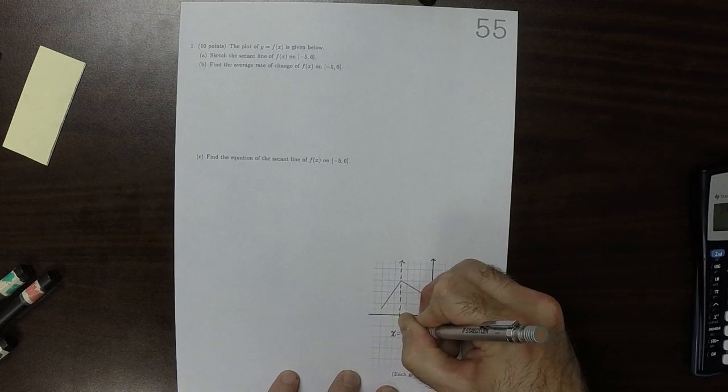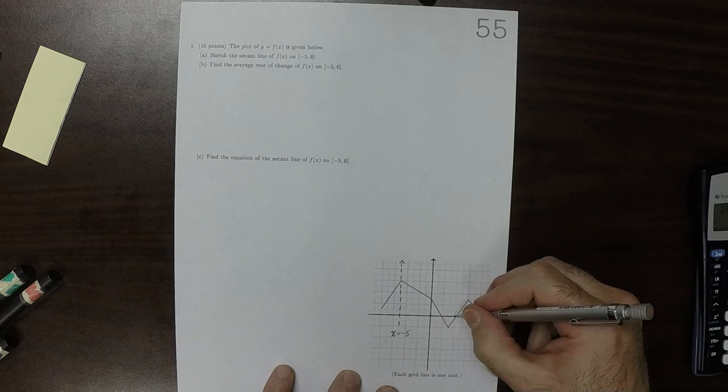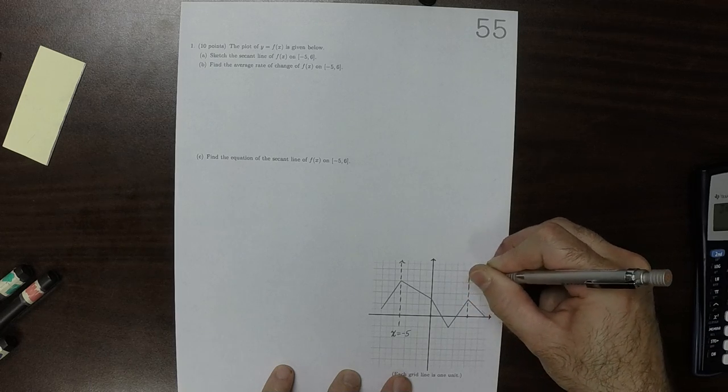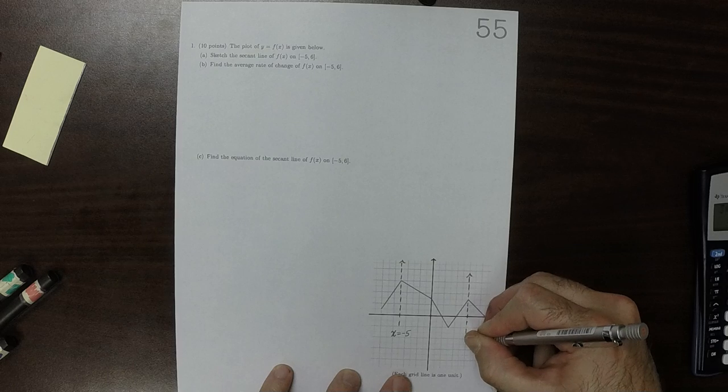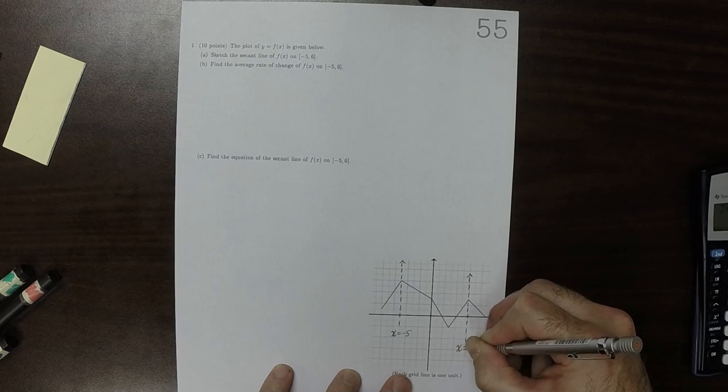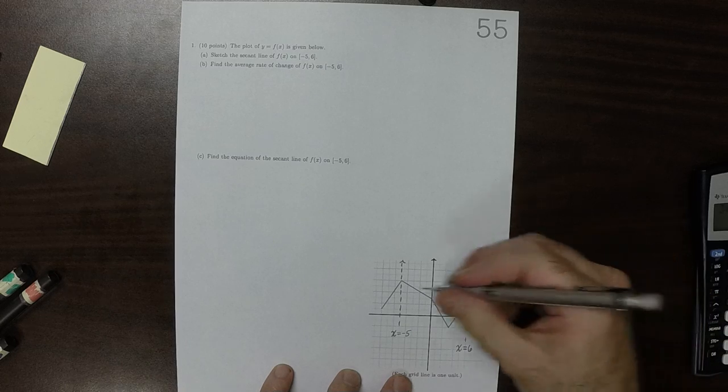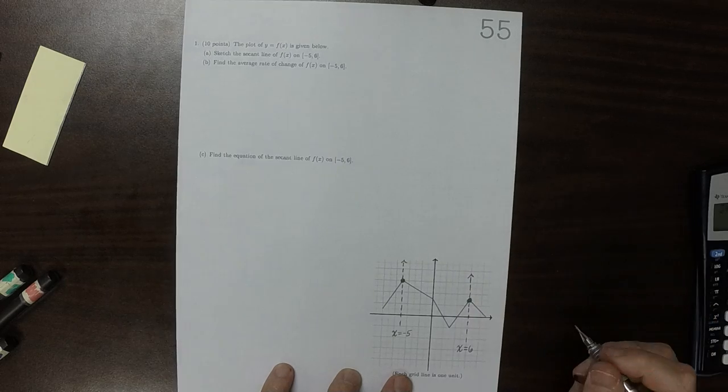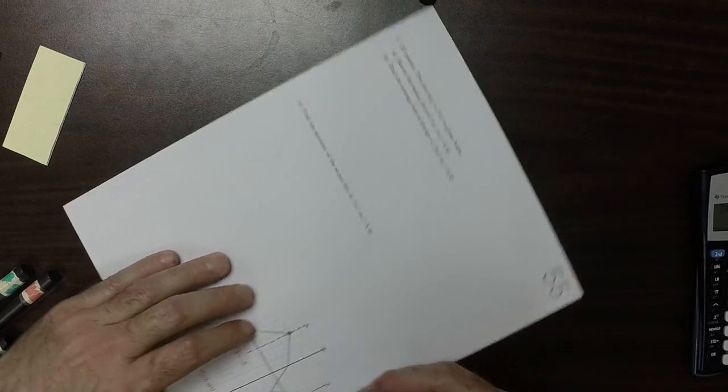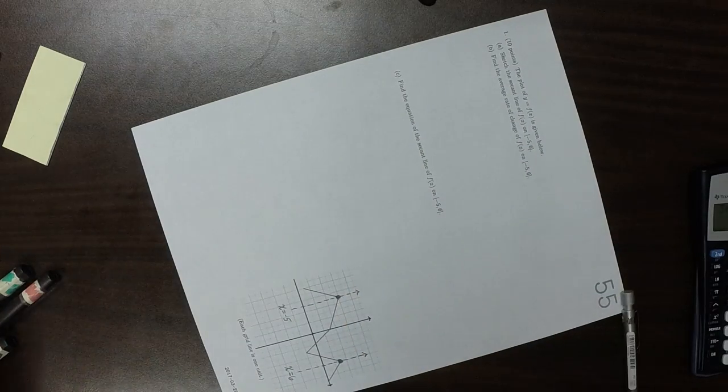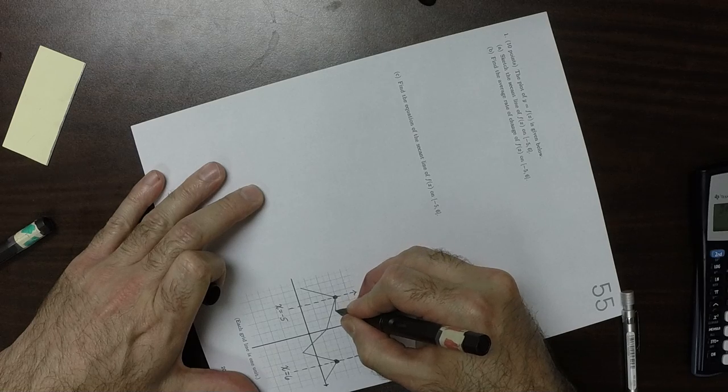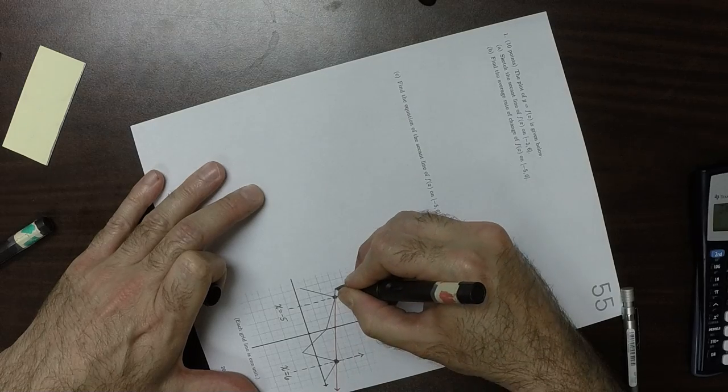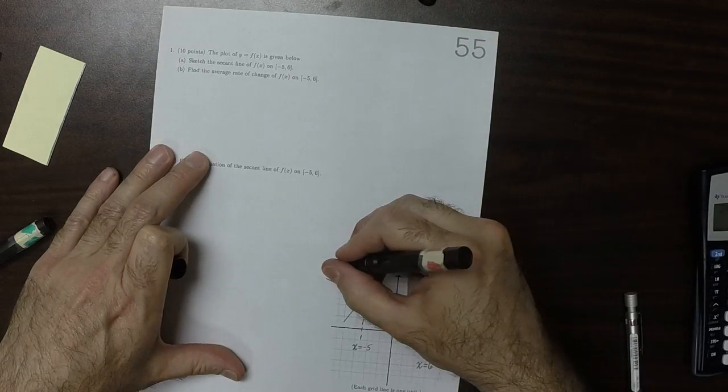So that's negative 5, and then 6, 2, 4, 6. So, what's being requested is that here's a point on the plot, and here's another point on the plot. Part A, what's being requested is to sketch this line. Okay, so that's part A.